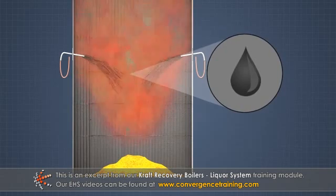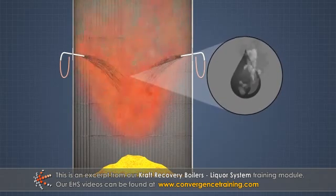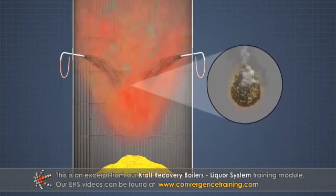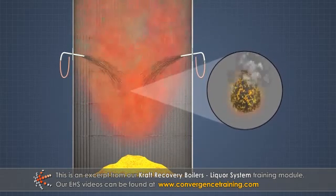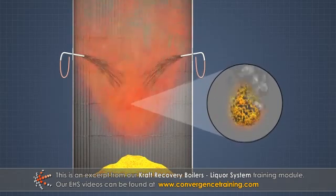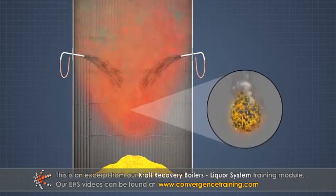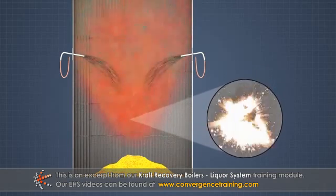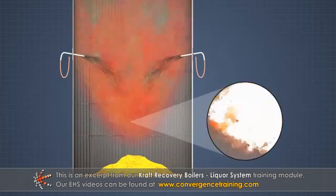First, the liquor droplets dry as they fall through the hot combustion gases. Then, the easily volatilized components are released from the liquor droplets and burned.